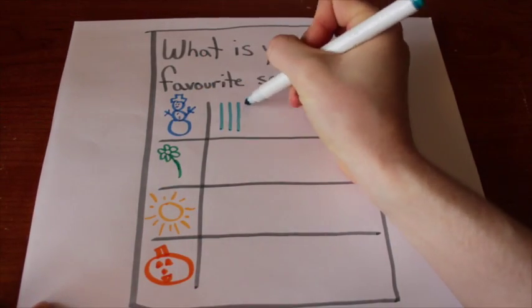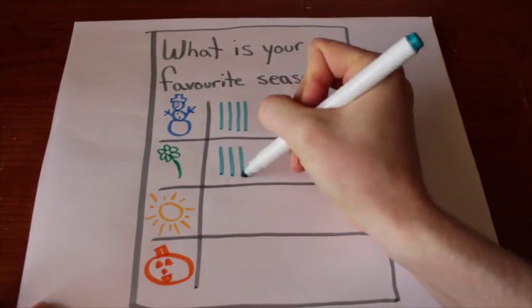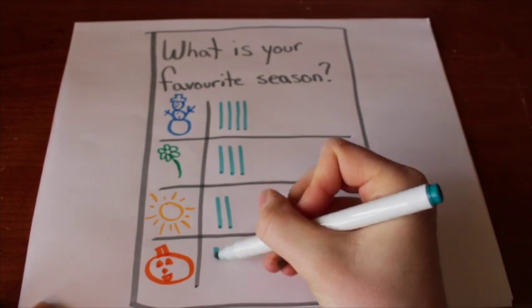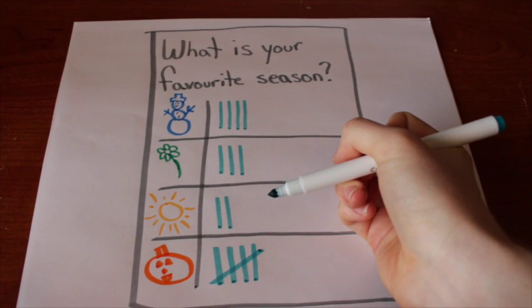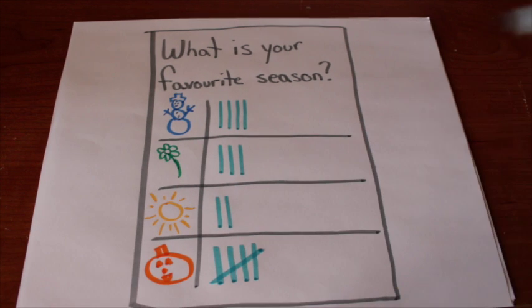Miss Brown collects her students' choices by making a tick next to their favorite season. More than four students like Fall, so Miss Brown draws the fifth tick across the other four.